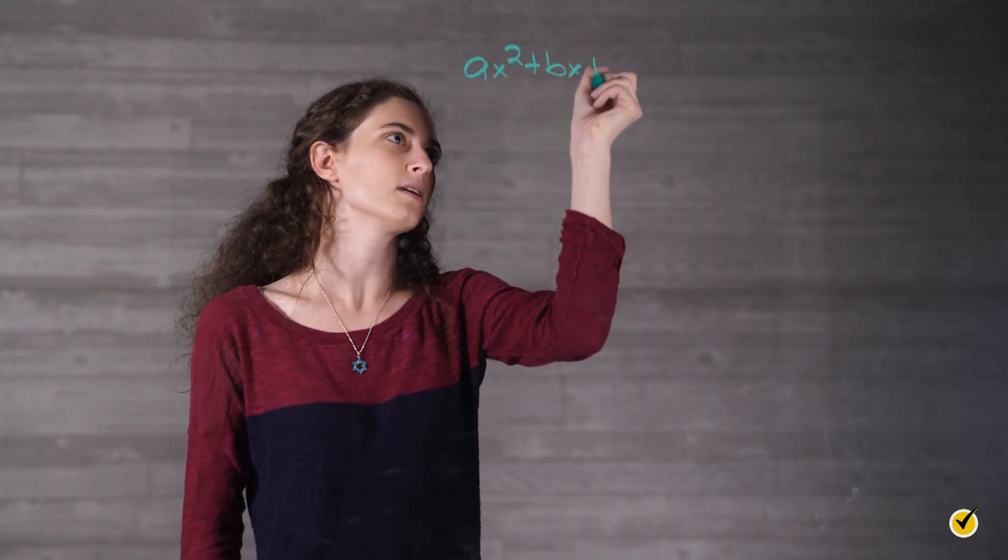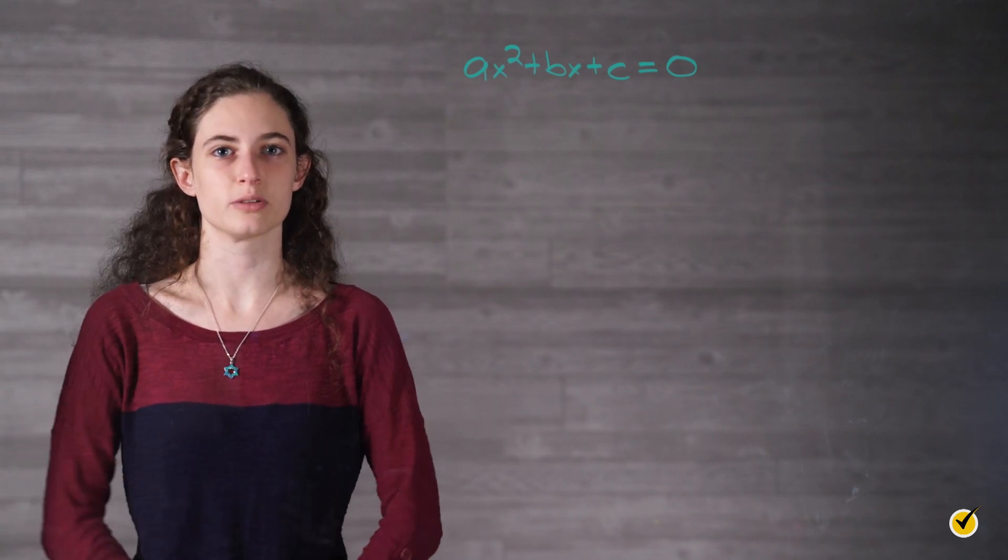Before you get started with any solving method, make sure your equation is written in standard form: ax squared plus bx plus c equals 0. This will prevent errors and can provide insight into choosing the most appropriate method for solving an equation. If your equation is not in standard form, simply add or subtract terms as needed.